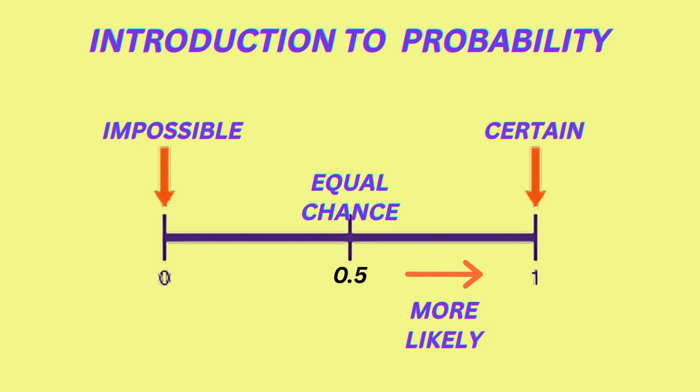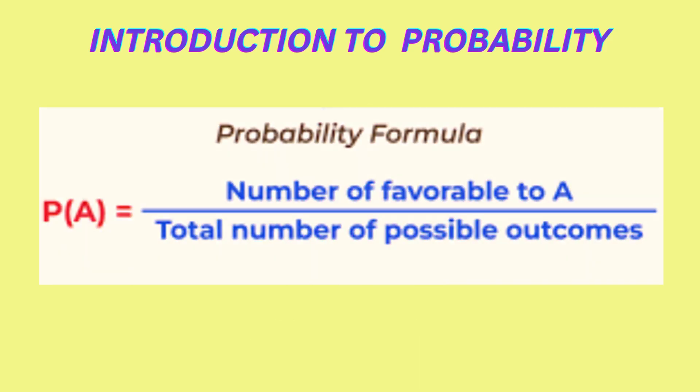The closer the probability is to one, the more likely the event is to occur. The closer it is to zero, the less likely the event is to occur. The basic formula for probability is the number of favourable outcomes over total number of possible outcomes. The total number of possible outcomes is often referred to as the sample space.